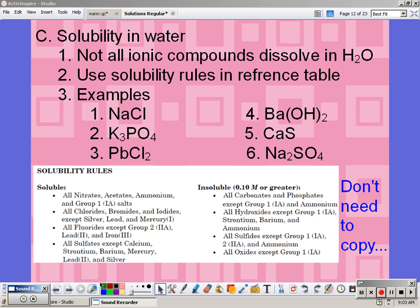So NaCl, you look at the anion, which would be Cl. I find my rules for chlorides. It says all chlorides are soluble, so all chlorides are going to dissolve and become aqueous, except if it's with silver, lead, or mercury. Well Na is neither silver, lead, nor mercury, so this is going to remain aqueous.